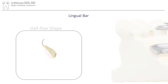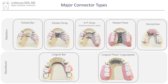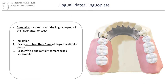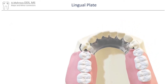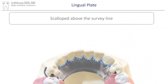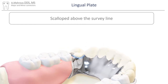Now let's move on to our last major connector, the lingual plate major connector. These are indicated in cases with less than 8mm of vestibular depth or cases with periodontally weakened teeth. It's important to have rests on either side of the major connector in order to transmit the forces along the long axis of the abutment teeth. Lingual plates usually follow a scalloped outline from contact to contact above the survey line.